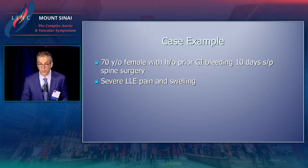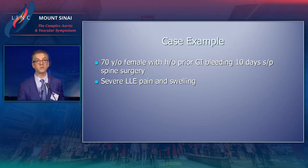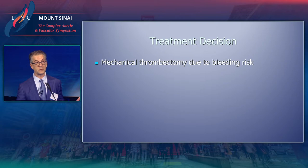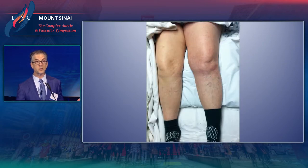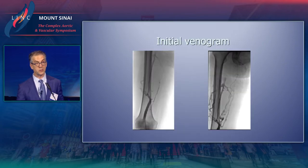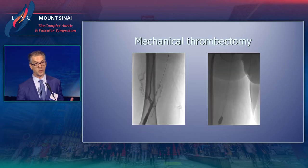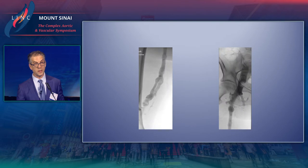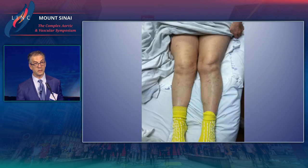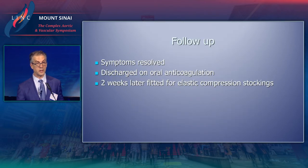Here, a patient with prior GI bleeding 10 days in the past, also 10 days status post cervical spine surgery, with severe leg pain and swelling. This is somebody I'm not going to be excited about for catheter-directed thrombolysis. So we chose a purely mechanical option. The patient is prone; you can see extensive left leg thrombus going all the way up. This was strictly mechanical, with the idea of fixing the underlying lesion. The patient was subsequently treated with anticoagulation.